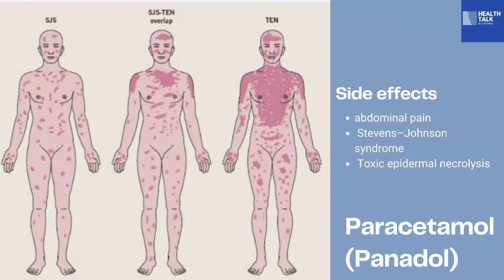For patients taking paracetamol for a long period of time, they may experience abdominal pain, Stevens-Johnson syndrome, or toxic epidermal necrolysis. As you can see in the picture, a patient with Stevens-Johnson syndrome has rashes all over the body. When there is an overlap with toxic epidermal necrolysis, rashes are generalized over the entire body. This is a serious side effect of paracetamol, so be careful if self-medicating. You need to consult your doctor, otherwise you may be prone to these side effects: abdominal pain, Stevens-Johnson syndrome, or toxic epidermal necrolysis.